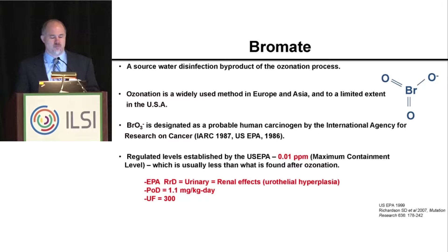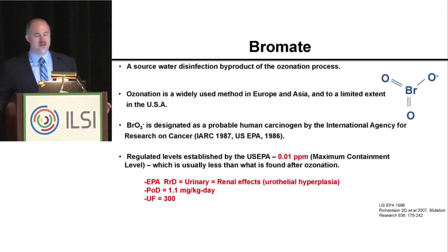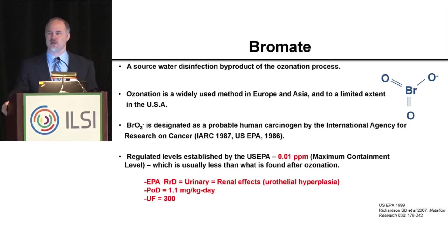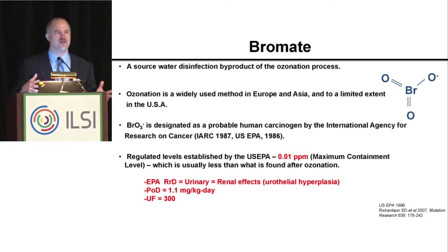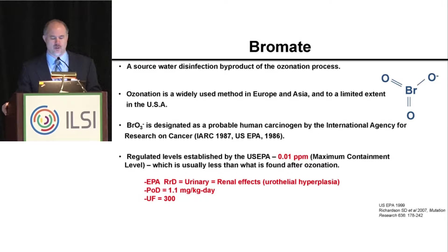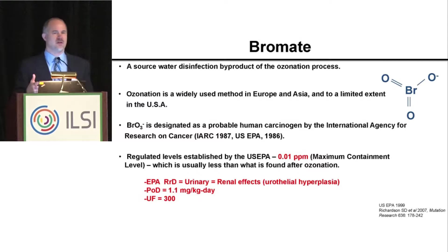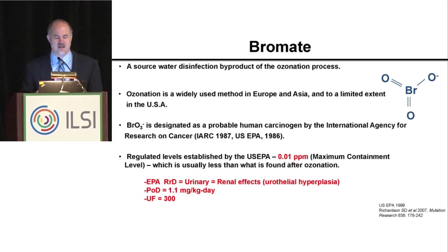Bromate is a probable human carcinogen by IARC. It actually targets the kidney. The EPA has actually looked at all the data out there and has determined that its maximum contaminant level is 0.01 parts per million, or 10 parts per billion. And again, as Dr. Schneider pointed out, it's not necessarily the safest level — this is a cost-benefit analysis.